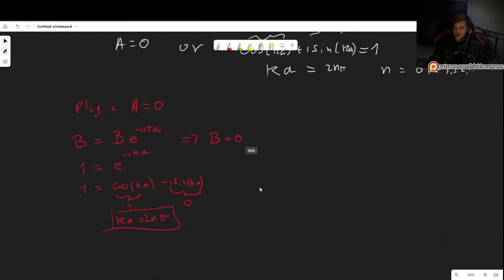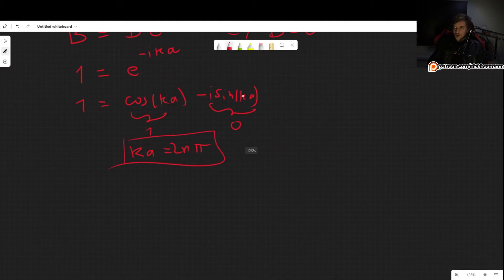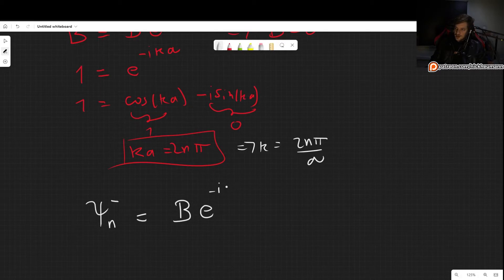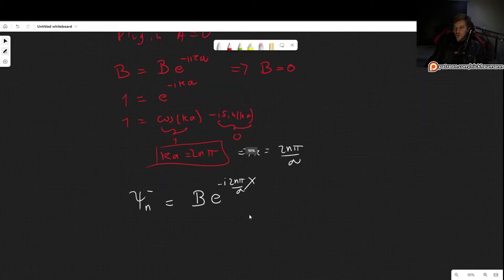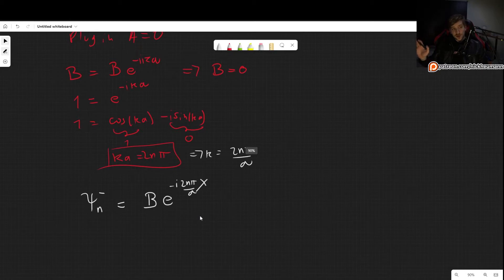So if A equals 0, we get one solution, which we can call ψ_n^-. Why minus? Because the B has the negative exponential, which is Be^(-i(2nπ/a)x). So this is one solution, not normalized, but one solution.